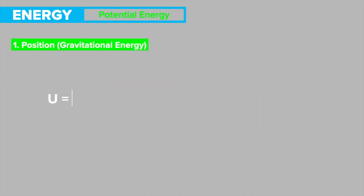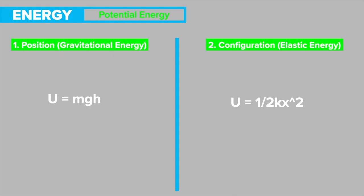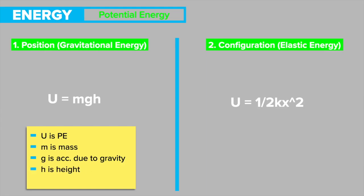Formula one: for position, often known as gravitational energy. In formula one, U is potential energy, where m is mass, g is acceleration due to gravity, and h is height. Because mass times gravity equals weight, this formula can be broken down further as potential energy equals weight times height.